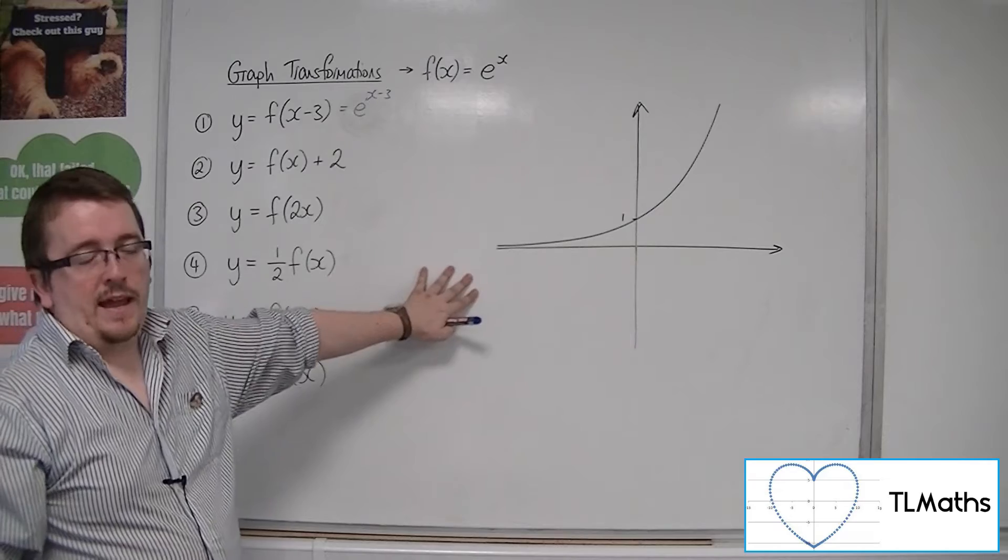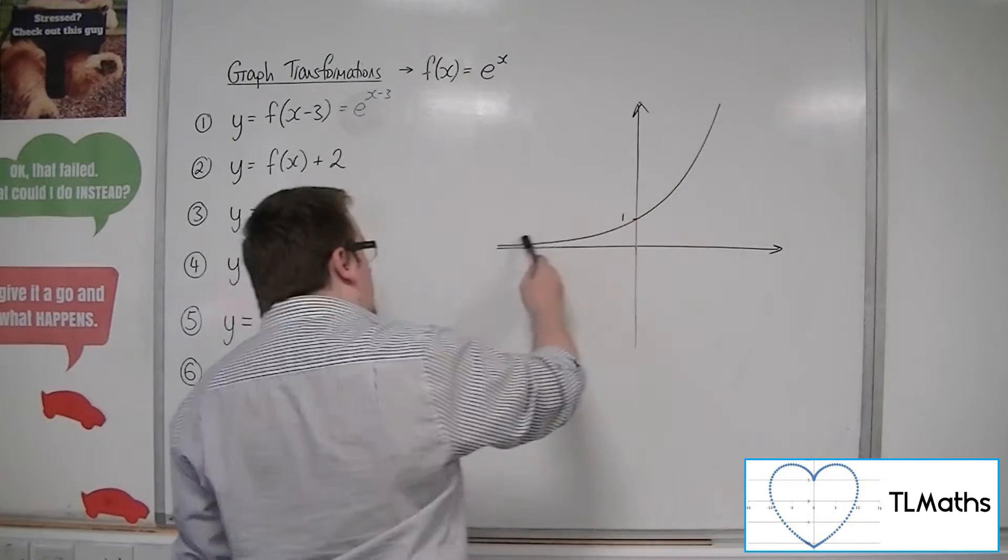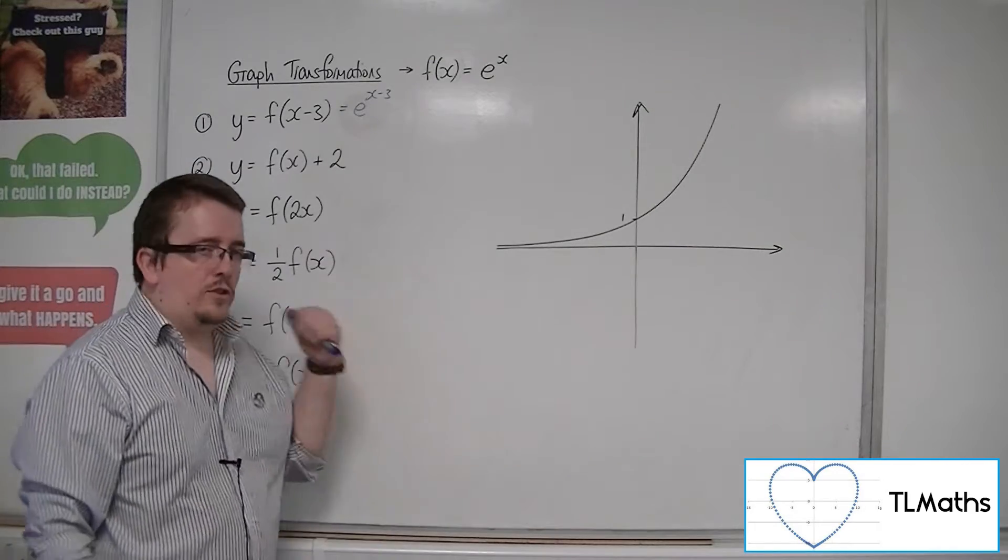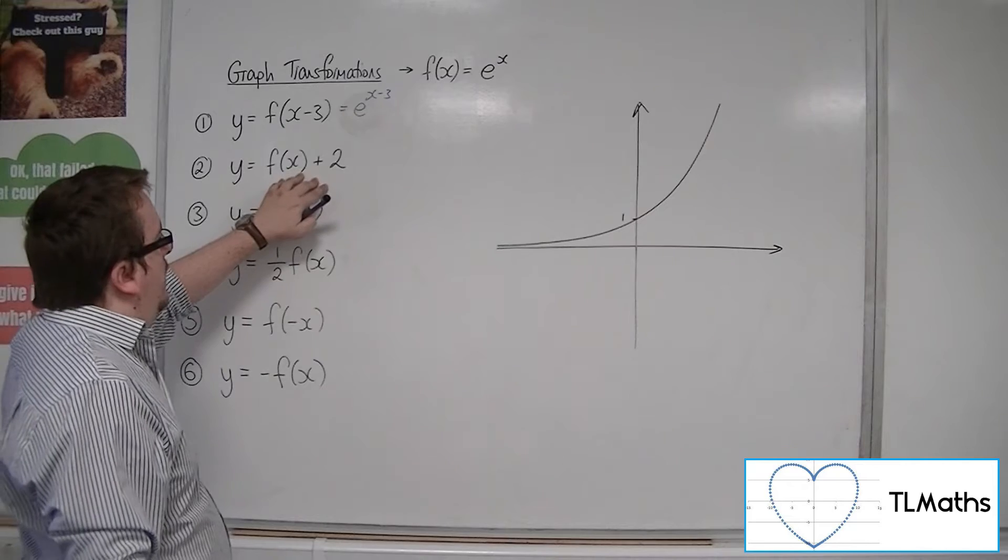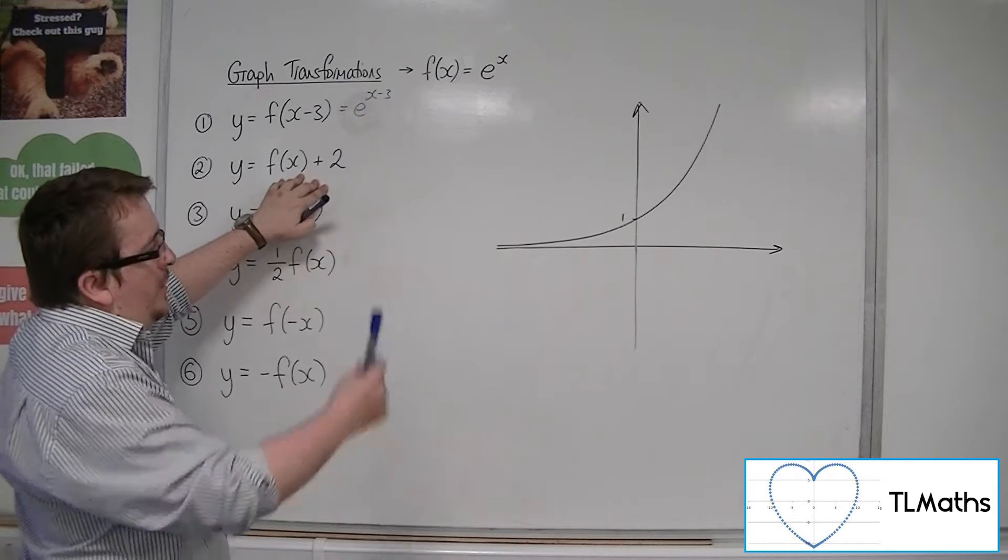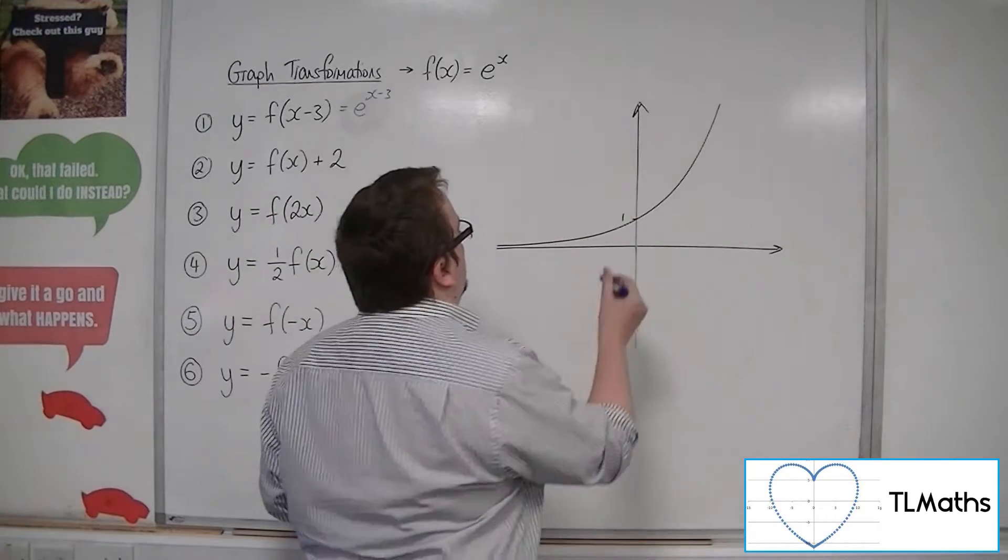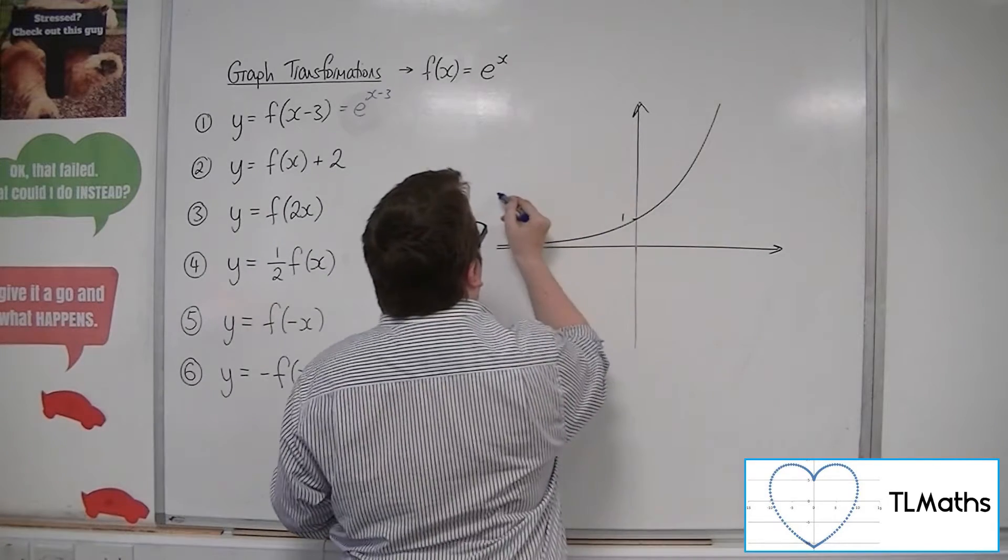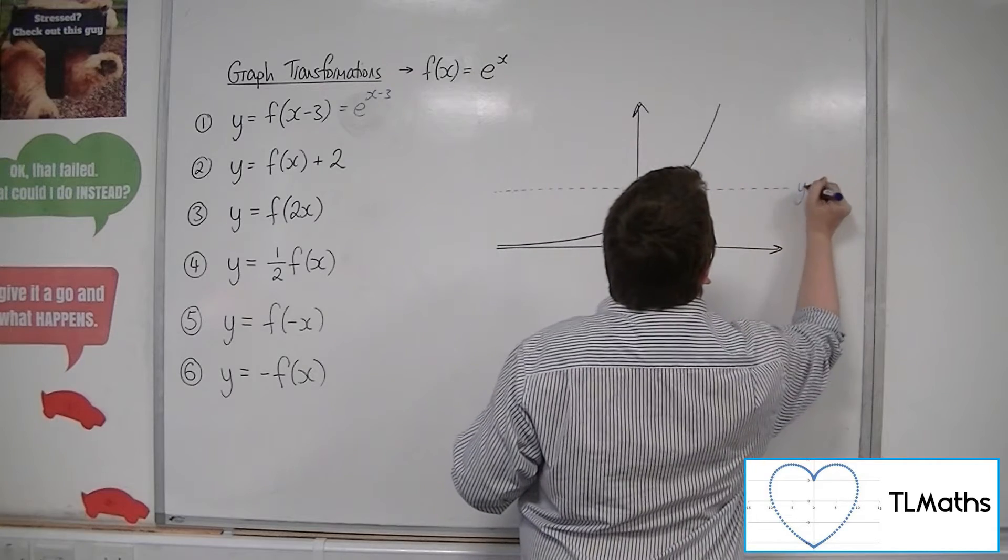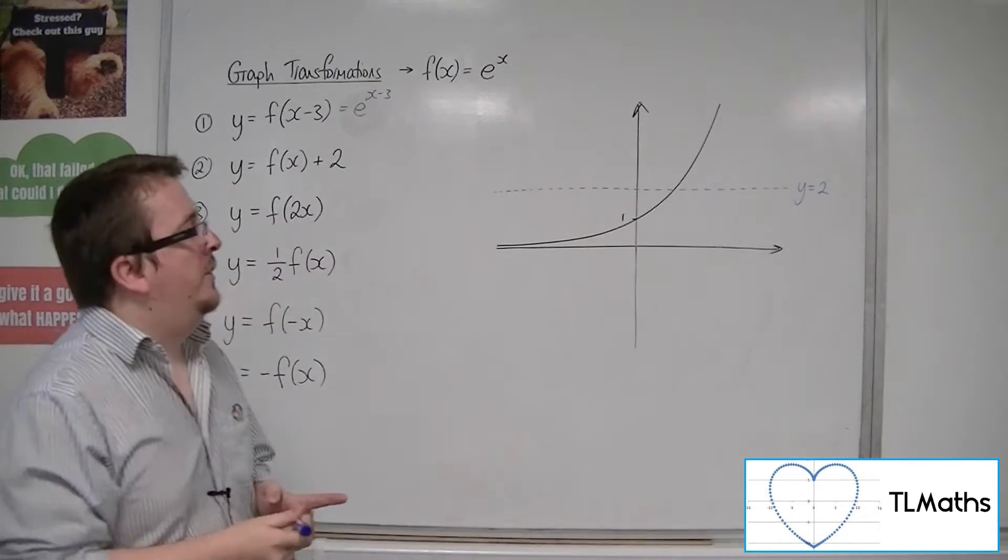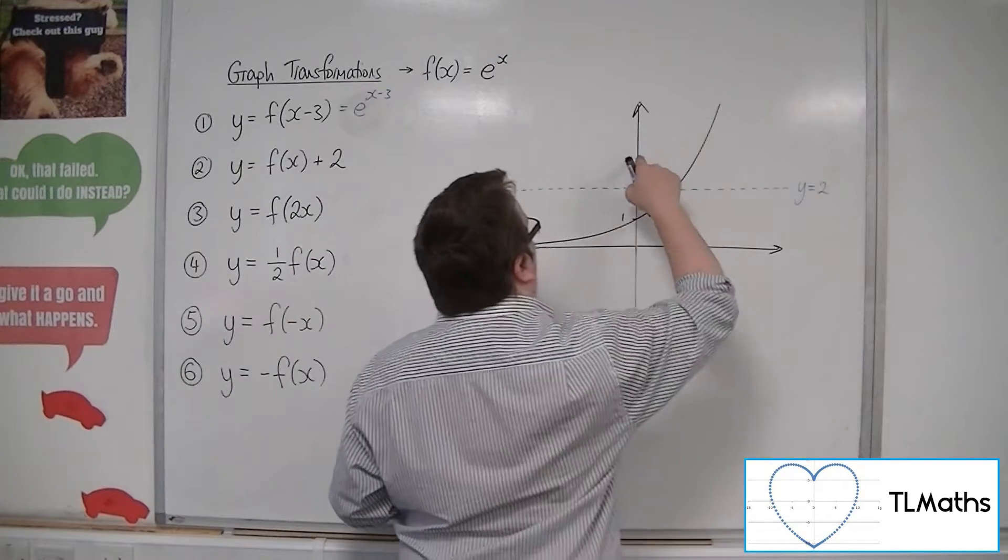Now, y equals e to the x has a horizontal asymptote at the x-axis. So it's tending towards the x-axis in that direction. So if I translate the curve by two units in the vertical direction, then that translates the asymptote as well. So we now have an asymptote at y equals 2. And we know also that the curve will be crossing through the y-axis at two units up, so at 3.